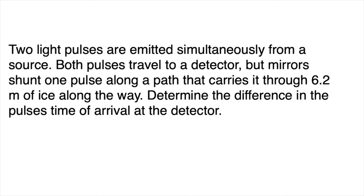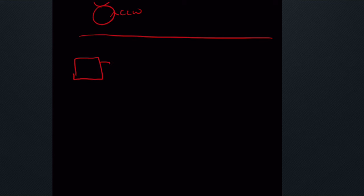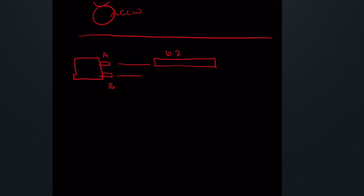Now for light and optics. Two light pulses are emitted simultaneously from a source. Mirrors shunt one pulse along a path carrying it through 6.2 meters of ice, while the other travels through 6.2 meters of air. We need to find the difference in arrival times at the detector. Imagine one emitter splitting into beam A through ice and beam B through air, both reaching the same detector — we want the arrival time difference.